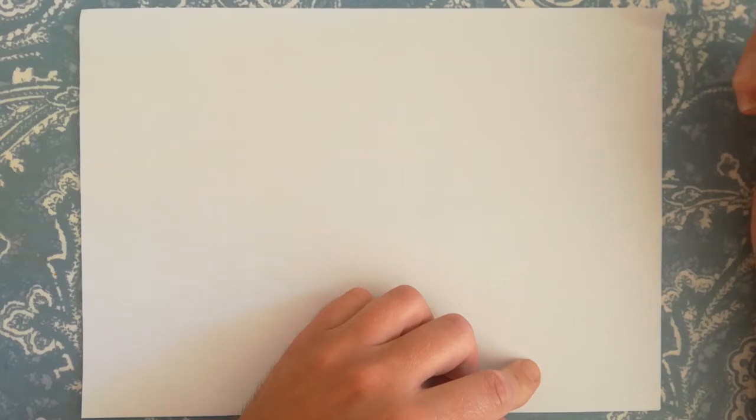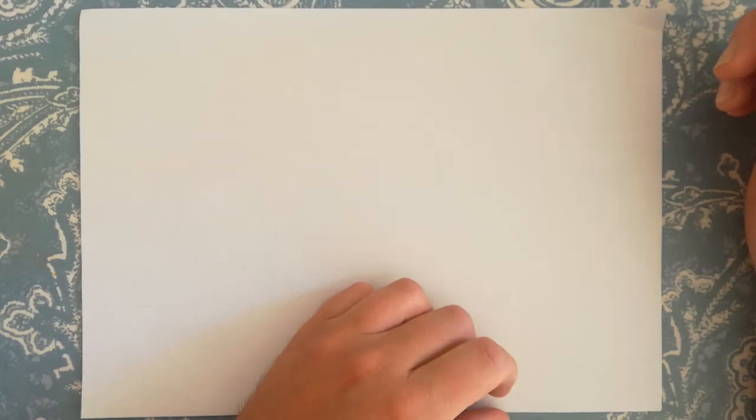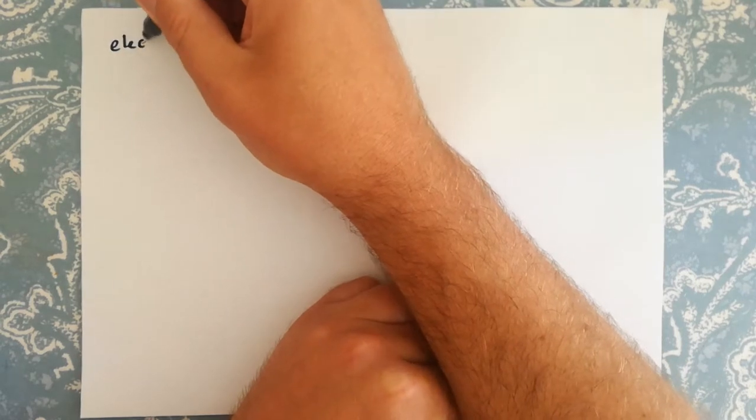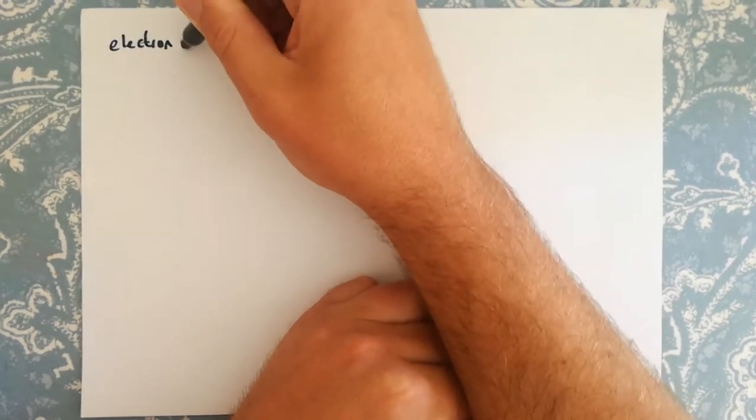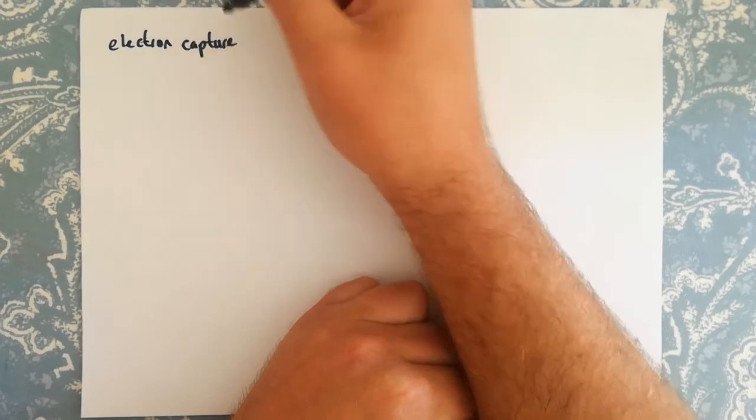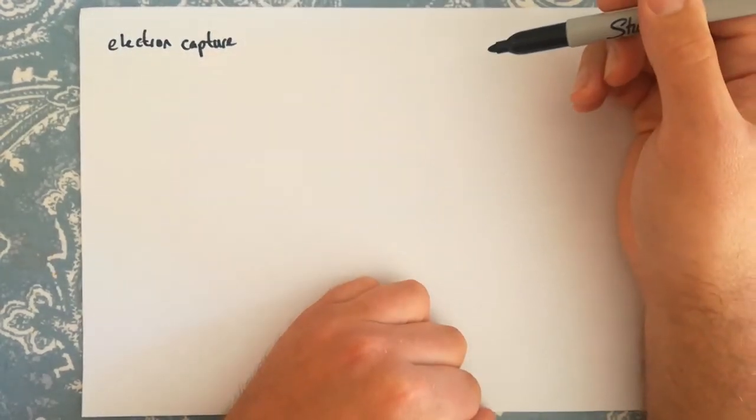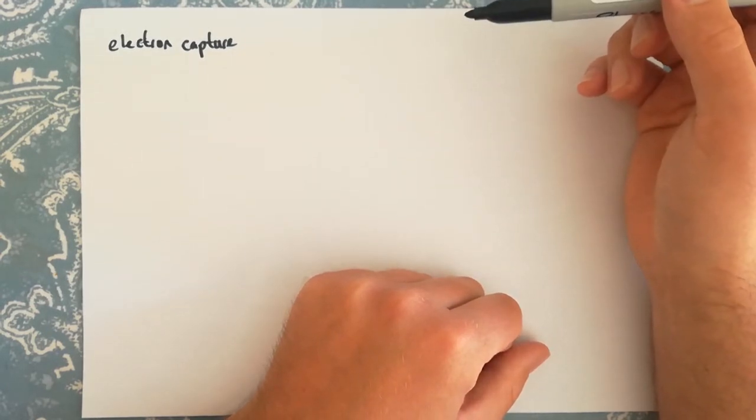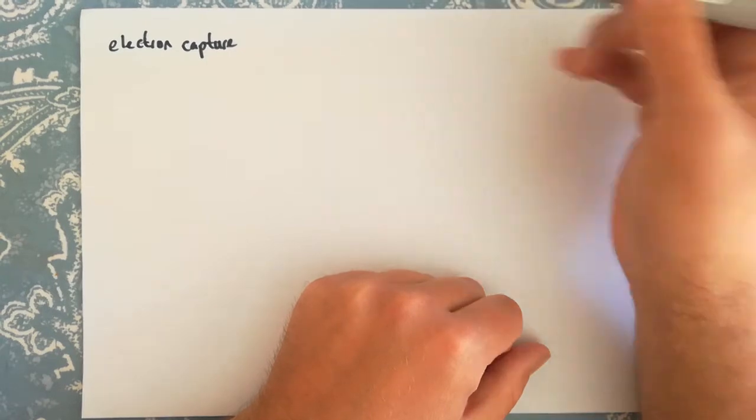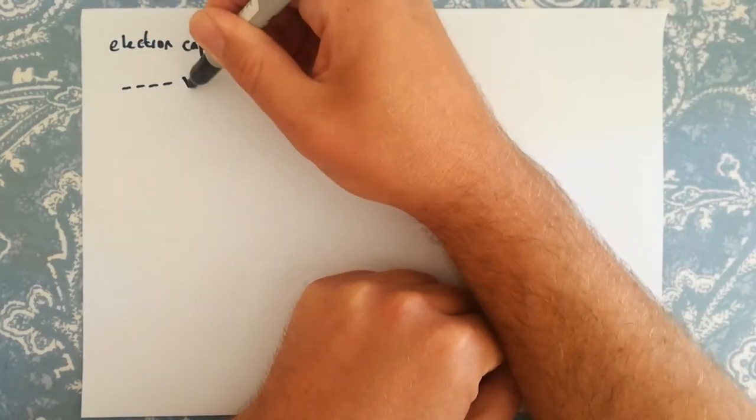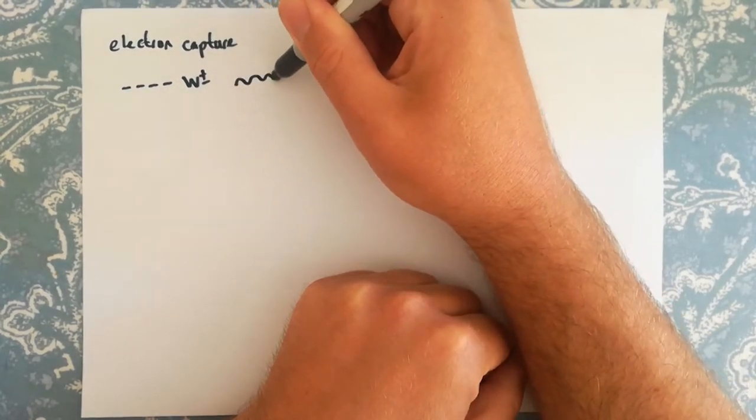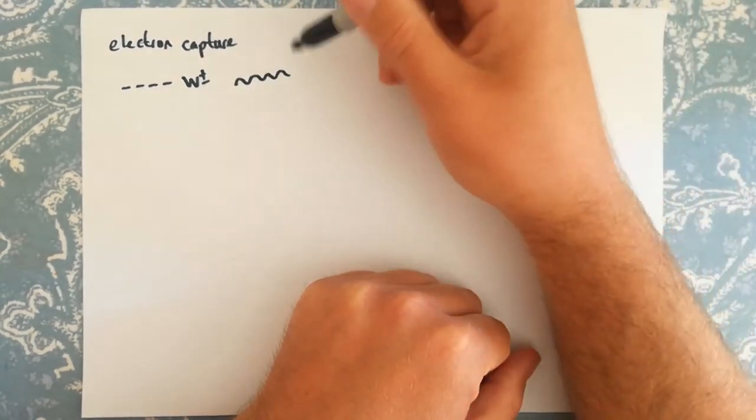Okay, so we will start with electron capture. By the way, I've realized that I've been using a dashed line to represent the W plus, W minus bosons, and I've realized actually in the AQA exam papers they use a wiggly line. You can basically use either for your W or Z zero exchange bosons.